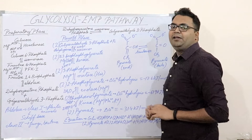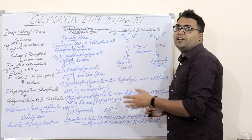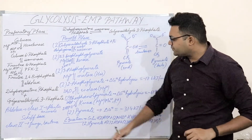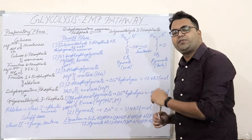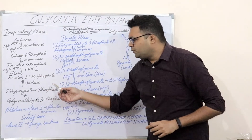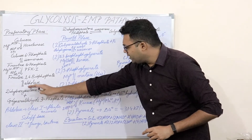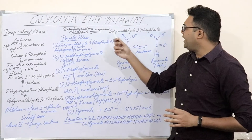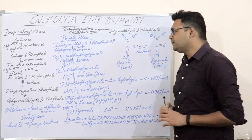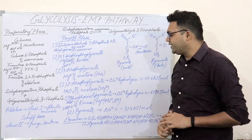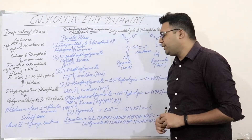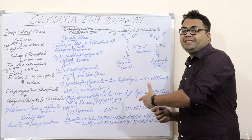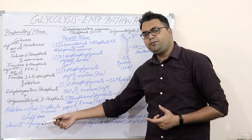The enzyme aldolase causes aldol condensation, breaking down the 6-carbon fructose-1,6-bisphosphate into two 3-carbon compounds: dihydroxyacetone phosphate (DHAP) and glyceraldehyde-3-phosphate (G3P). DHAP is then converted via isomerase into glyceraldehyde-3-phosphate, giving you two molecules of G3P. Aldolases are of two types: class 1, present in all plants and animals, uses a Schiff base intermediate; class 2, present in fungi and bacteria, uses a zinc ion and does not use a Schiff base intermediate.